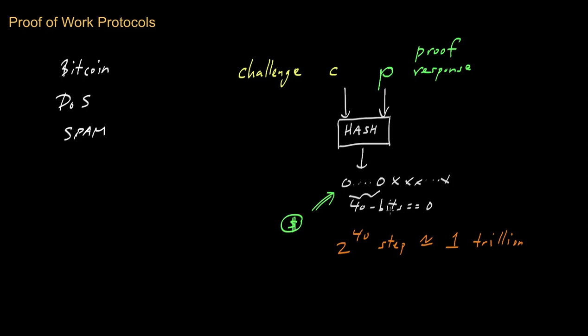Likewise, every time you remove a zero from consideration or from the requirement, that would reduce the computational horsepower needed to about half of what it was previously. For example, if I only require the first 39 bits to be zero, that will require about half as many coin flips as requiring the first 40 bits to be zero.